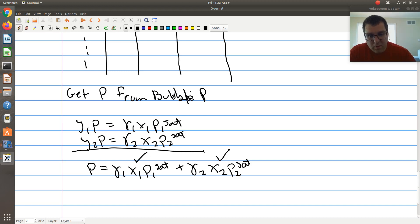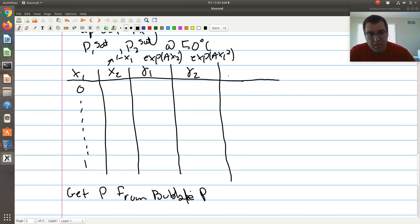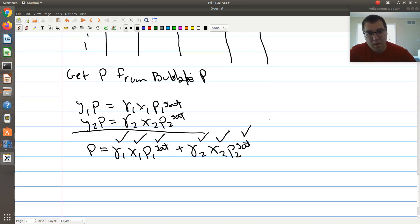So I know X1 and X2, I know gamma 1 and gamma 2 from those rows, and I know P1 sat and P2 sat. So I would go and I would first then calculate P. How I get P is from a bubble P calculation. Then the last thing to calculate is Y1. How do I get Y1? Well, after bubble P calculation, Y1P is equal to gamma 1, X1, P1 sat. So solving for Y, Y1 would be gamma 1, X1, P1 sat, over P. So that's all for Y, Y1.